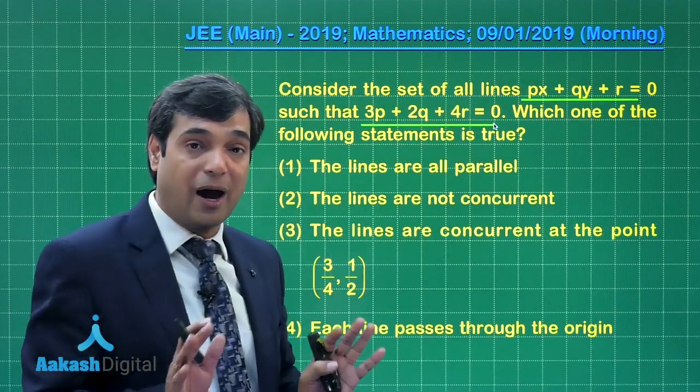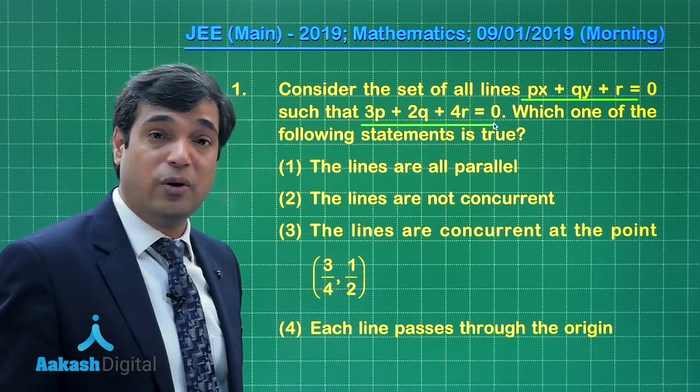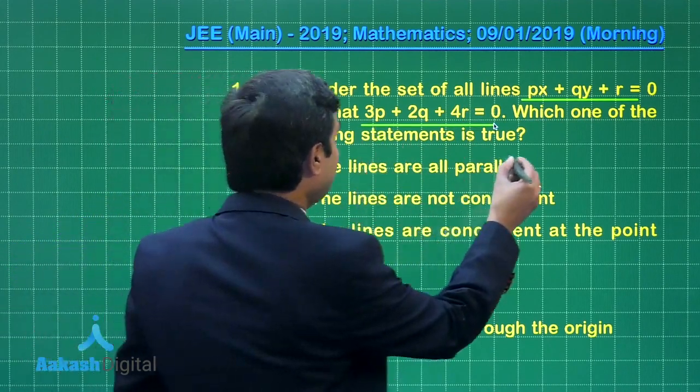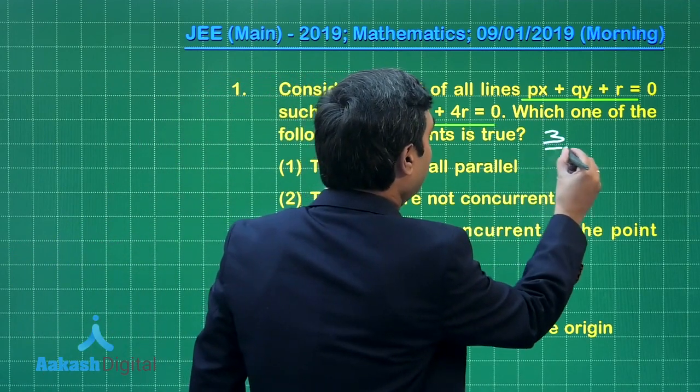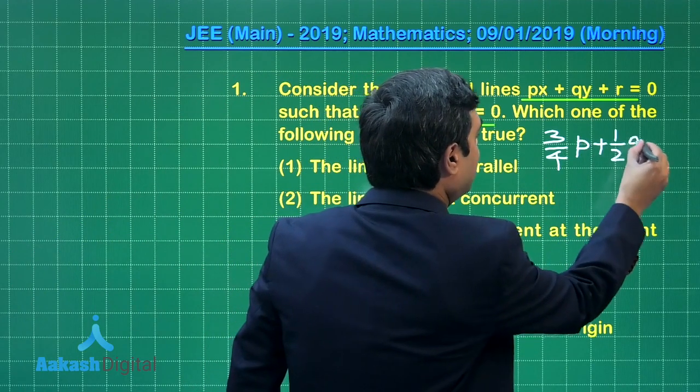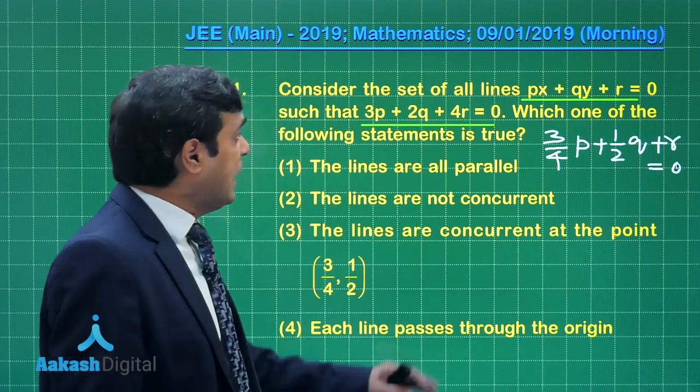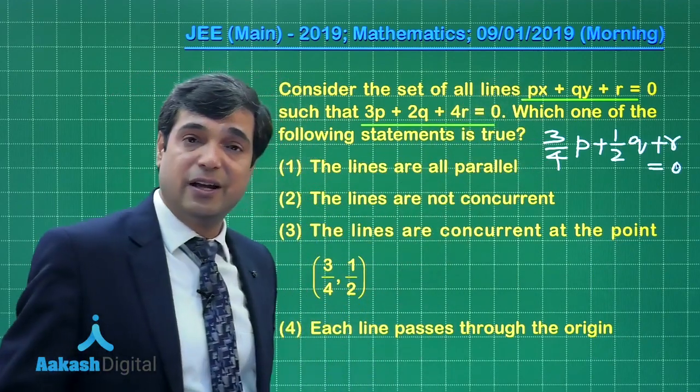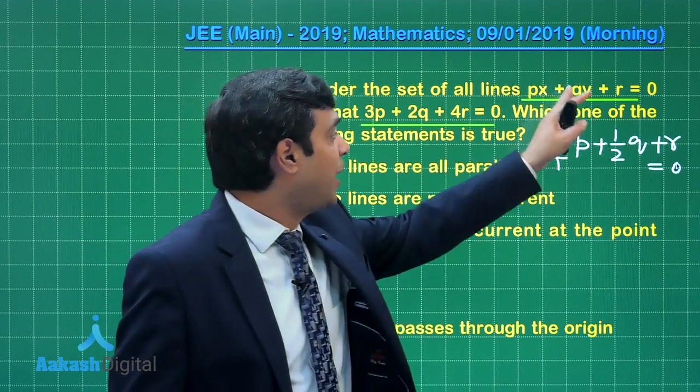Once you divide it by 4, it changes to the form 3/4 p + 1/2 q + r = 0. If you compare the coefficients, what is the outcome? We simply observe x is 3/4 and y is 1/2.